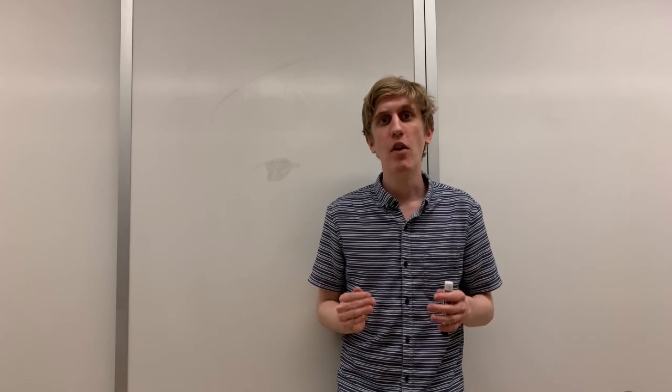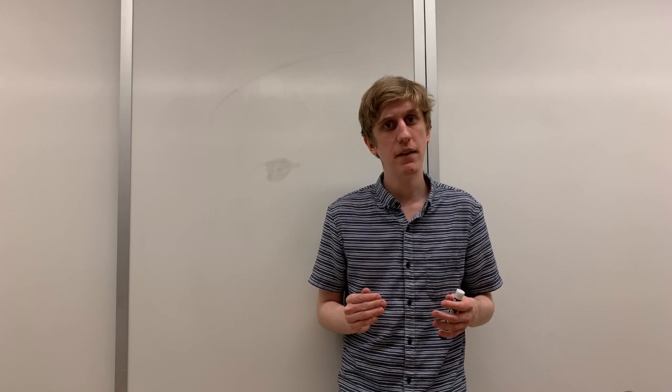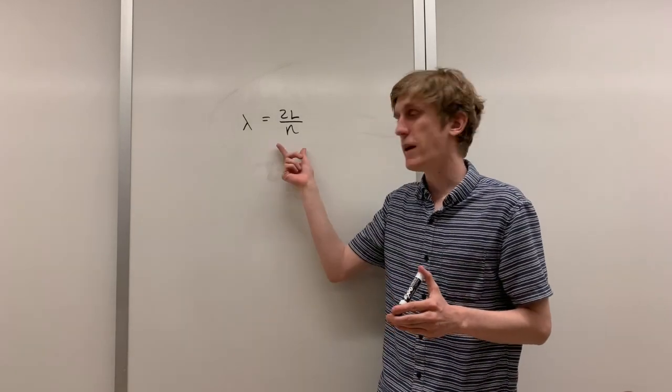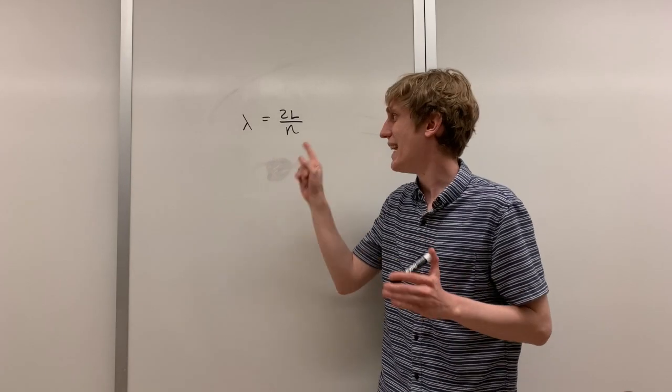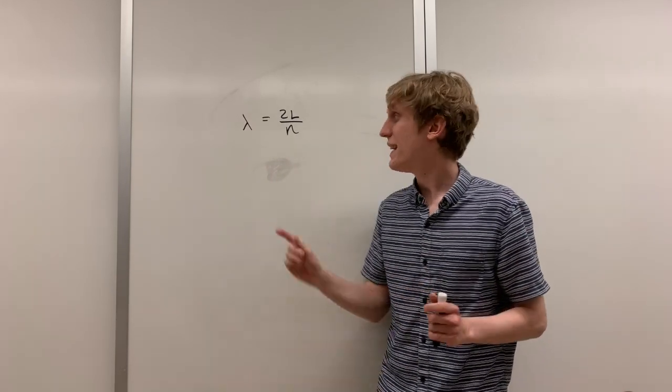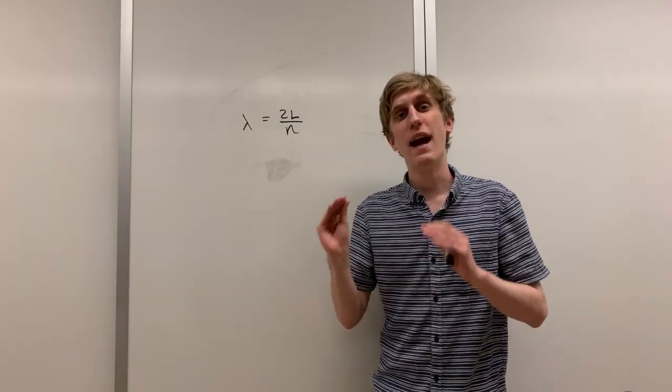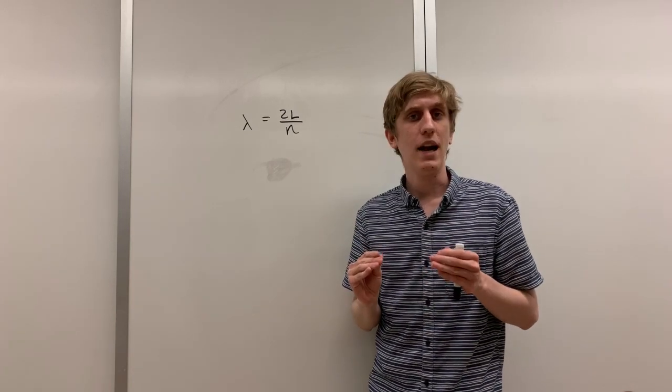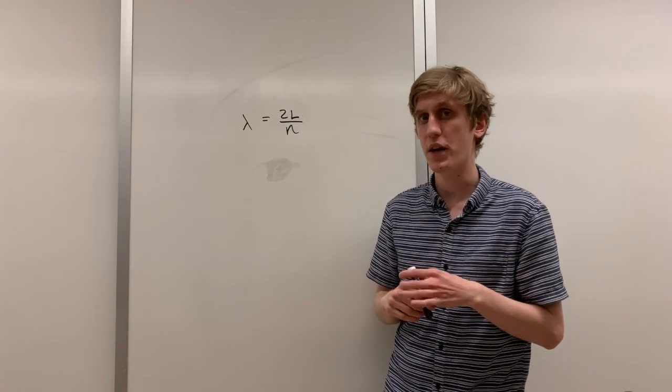A particle in a box behaves like a standing wave on a string with both ends fixed. The wavelengths of the particle are therefore constrained to be one of these, where remember that n is an integer. The fact that the particles are only allowed to have very specific wavelengths means that they're also only allowed to have very specific momentum, given by this equation.